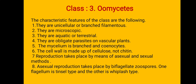Class 3 is Oomycetes. The characteristics are: they are unicellular or branched filaments, and they are microscopic. They are aquatic or terrestrial. They are obligate parasites on vascular plants — meaning they depend on another vascular plant which possesses xylem and phloem.